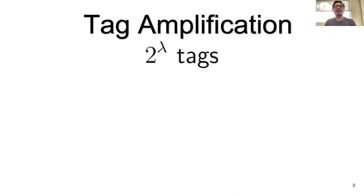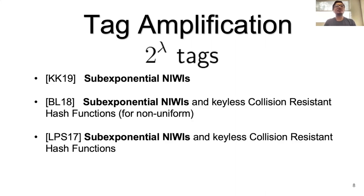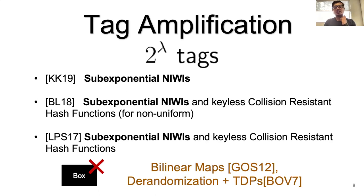This talk focuses precisely on that tag amplification procedure. A common feature of all prior non-interactive works is that they use sub-exponential non-interactive witness indistinguishability (NIWI) for tag amplification. The use of NIWIs makes these constructions non-black-box uses of cryptography, and the known assumptions for NIWIs are bilinear maps or derandomization and trapdoor permutation assumptions. In cryptography, we generally want to expand the basket of assumptions, so ideally we want black-box use of cryptography for tag amplification.